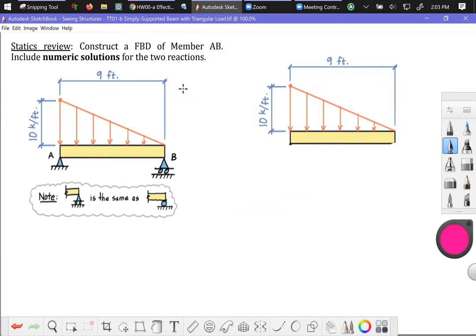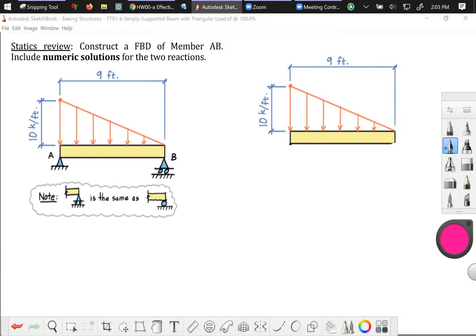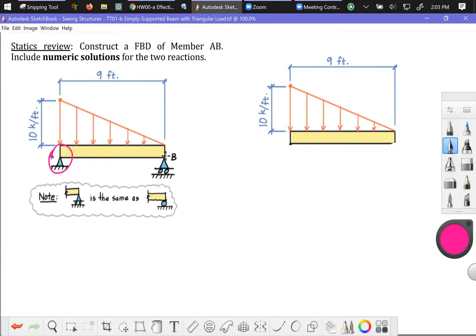Now all I need to do is replace these supports with the actions they exert on my free body. My body is member AB, that's my free body. And what I want to do is replace the support at A with a reaction, I'll call that A sub Y, pop a coordinate system X, Y there, and replace the pin roller at B with B sub Y.